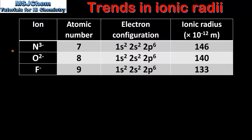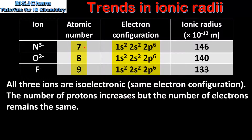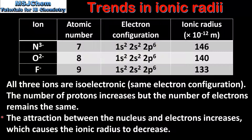The next ions we look at are those formed from the elements in period 2 — nitrogen, oxygen and fluorine. So we have the nitride ion, the oxide ion and the fluoride ion. By looking at the electron configuration we can see that these 3 ions are isoelectronic. If we look at the atomic number we can see that the number of protons in the nucleus of each ion increases, but the number of electrons stays the same. So just like before, the attraction between the nucleus and the electrons increases, which causes the ionic radius to decrease. As we go from the nitride ion to the fluoride ion we have an increasing number of protons pulling on the same number of electrons, which causes the ionic radius to decrease.